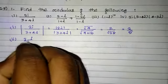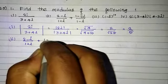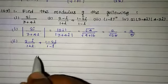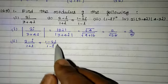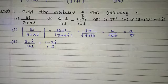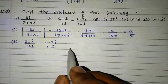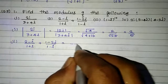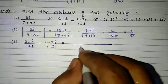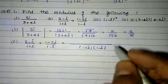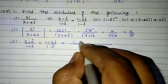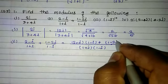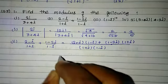Second sum: (2 minus i) divided by (1 plus i) plus (1 minus 2i) divided by (1 minus i). Find the modulus value. First, simplify the complex number. Taking LCM with (1 plus i)(1 minus i): (2 minus i)(1 minus i) plus (1 minus 2i)(1 plus i).